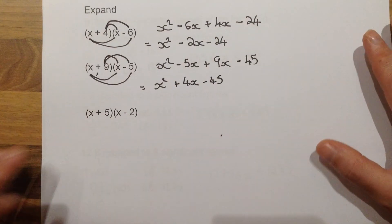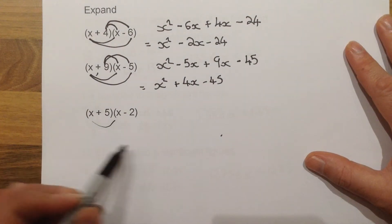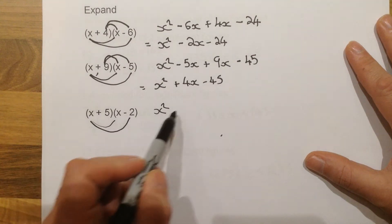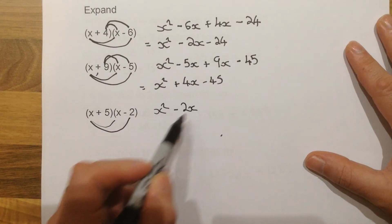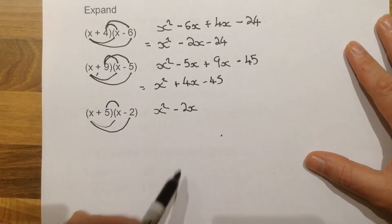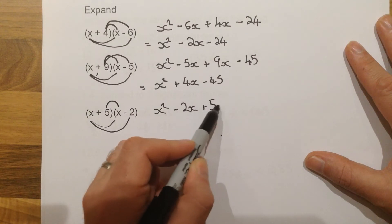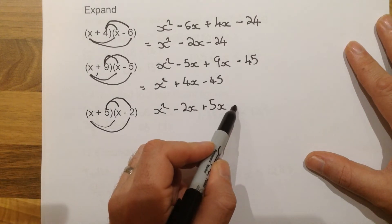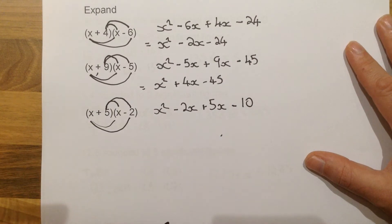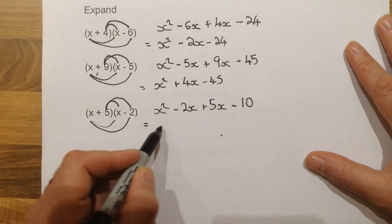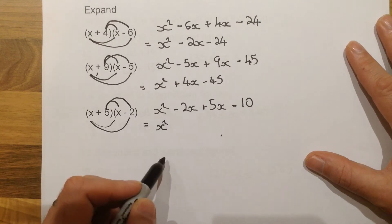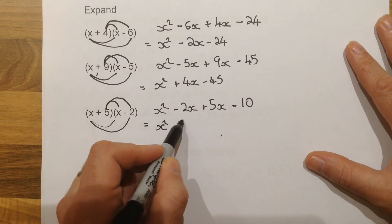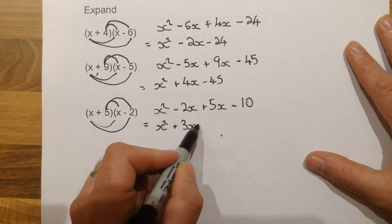For the final question, we would get X squared. X times minus 2, so minus 2X. Positive 5 times X, so plus 5X. Positive 5 times minus 2, gives us minus 10. And then simplifying for the second mark, X squared plus 3X and minus 10.